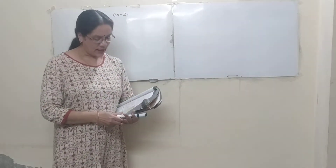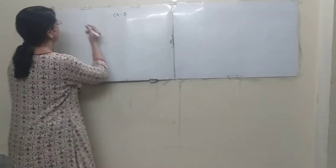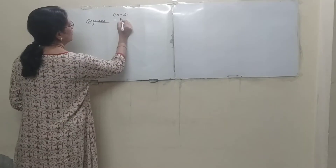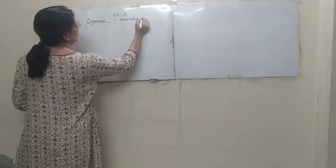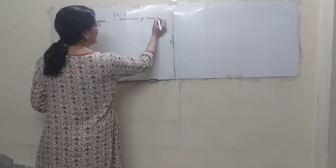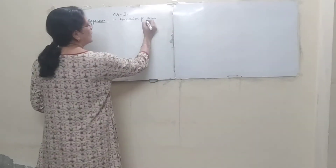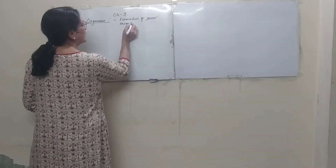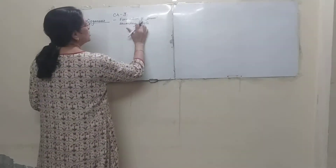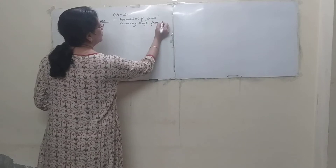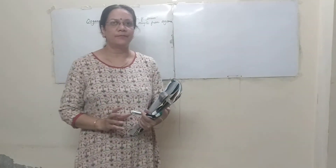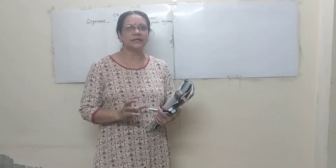Now we will try to understand the process of oogenesis. What is oogenesis? Obviously it is the formation of ovum, or more accurately, the formation of secondary oocyte. Instead of writing 'ovum' we should rather write 'secondary oocyte'. I will tell you why.